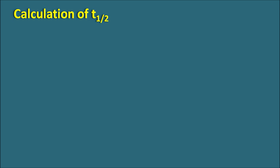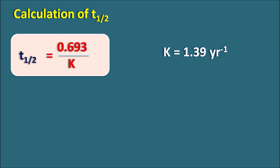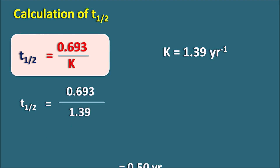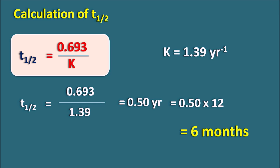Now let us calculate the half-life of the drug. For first order kinetics, t-half equals 0.693 divided by k. Substituting k equals 1.39 year inverse, t-half equals 0.693 divided by 1.39, which gives 0.50 years. Converting to months by multiplying by 12, we get 6 months. So this drug has a half-life of 6 months.